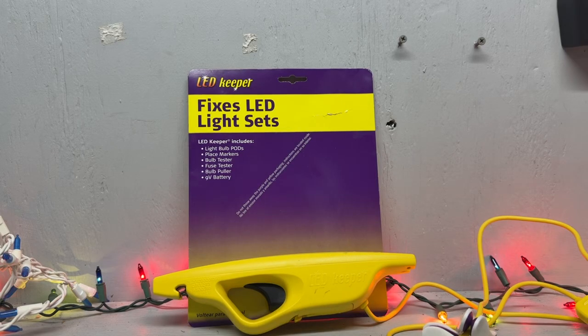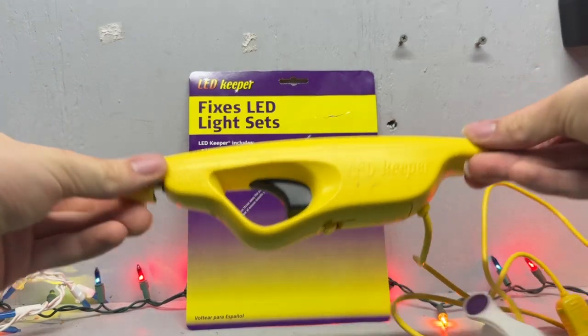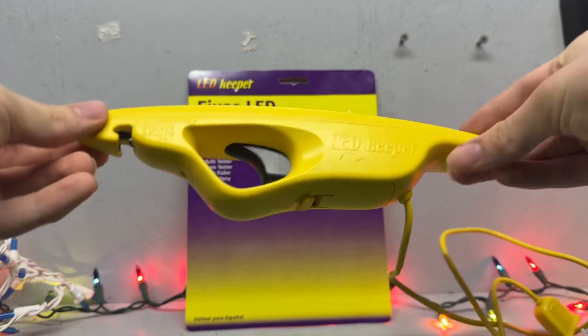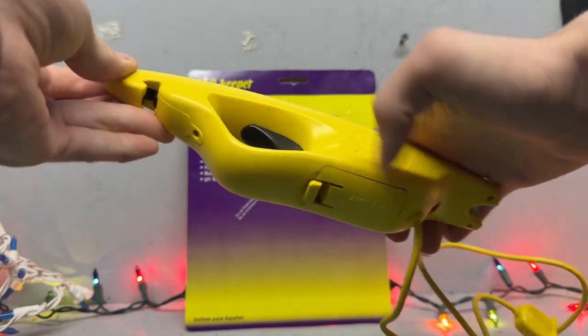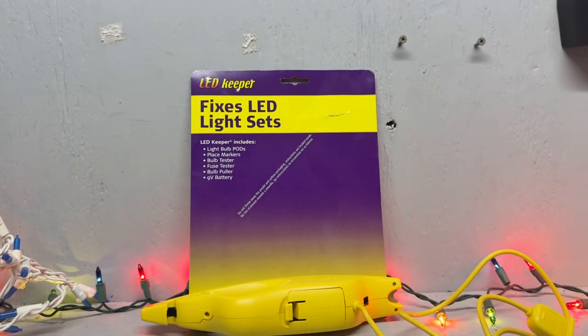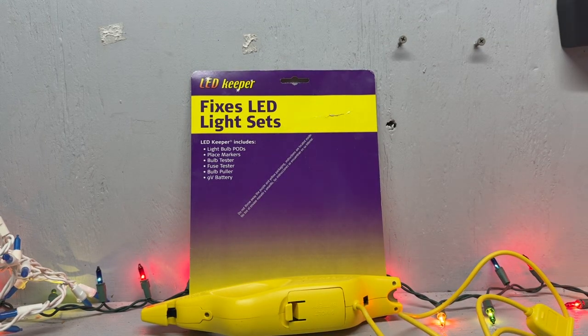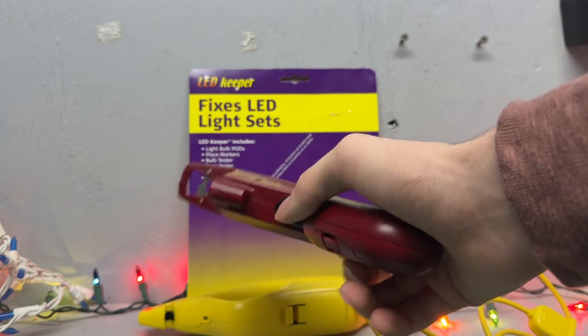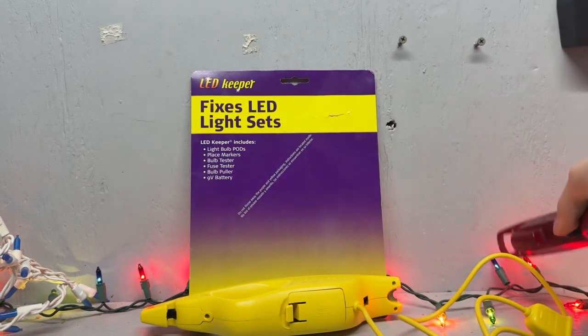Hey guys, today I'm going to do an overview and demonstration of the LED Keeper. This is a tool that fixes LED Christmas lights. It is by the same company that made the original Light Keeper Pro, and this is meant for fixing incandescent lights like these.